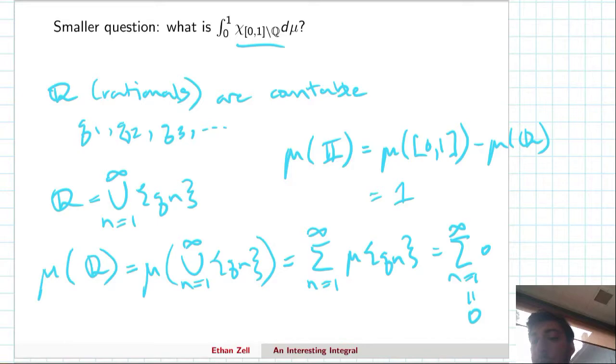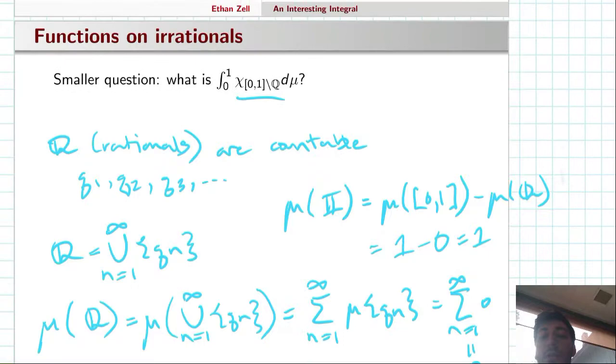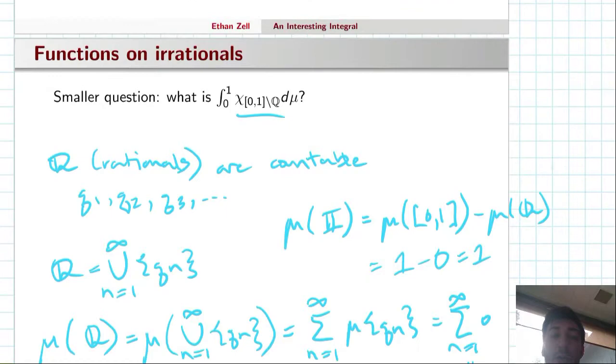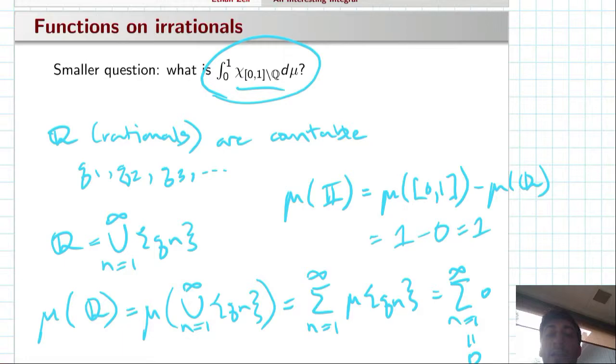Minus the measure of the rationals, because the rationals and irrationals are each other's complement. We know that this has measure one and the rational numbers as we showed has measure zero, so the irrational numbers on the unit interval has measure one.